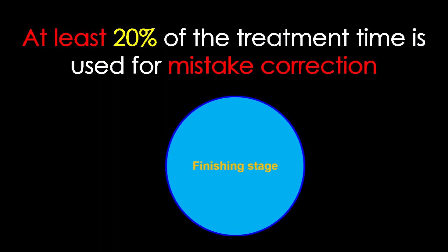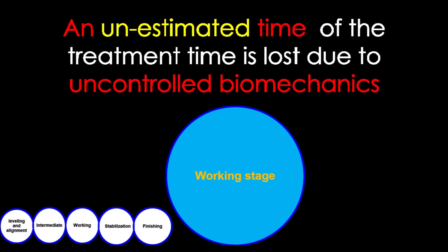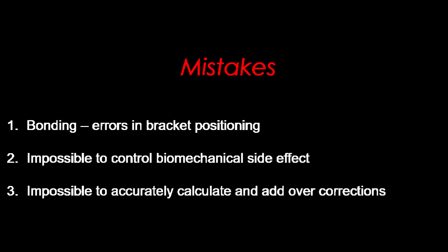The finishing stage is one of those stages whose duration is a direct result of control parameters such as bonding mistakes. At least 20% of the treatment time is used for mistake correction. The more interesting is the third stage, the walking stage, in which the major tooth movements are being exercised. An unestimated time is lost due to the difficulty to fully control those tooth movements and to anticipate the biomechanical side effects. The combination of bonding errors, biomechanical control and the impossibility to accurately compensate those expected side effects will cost us treatment time and results.